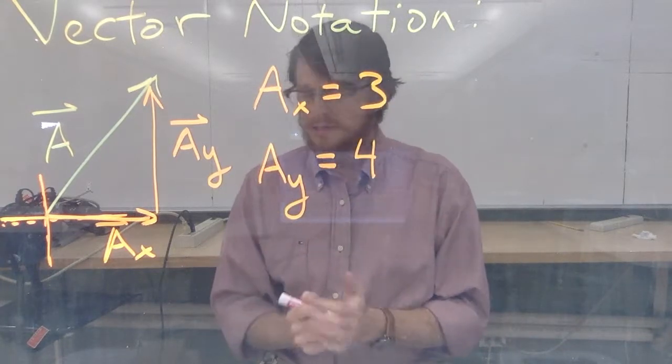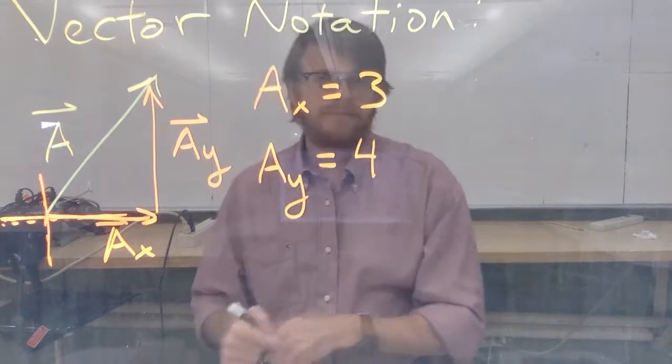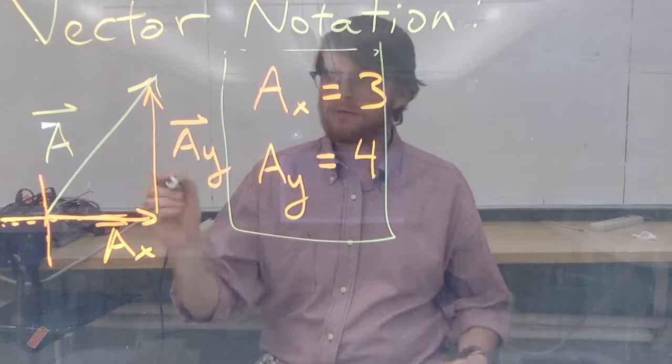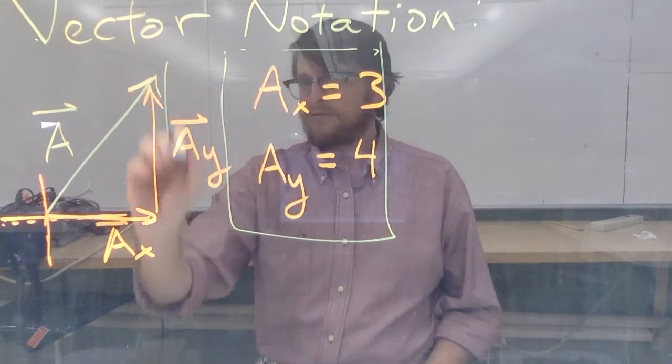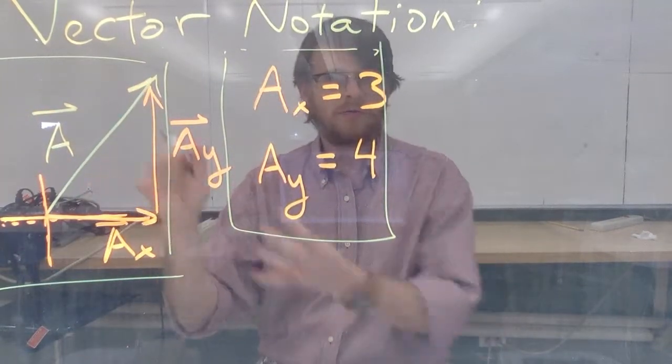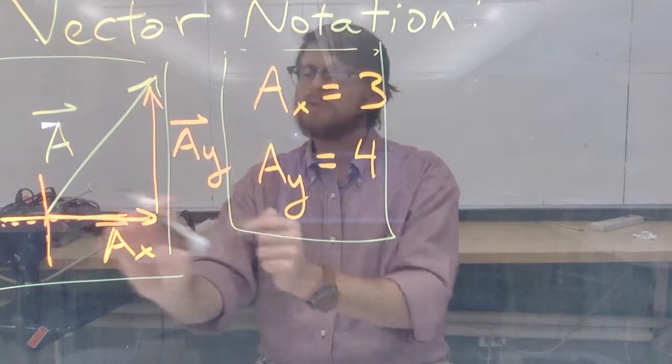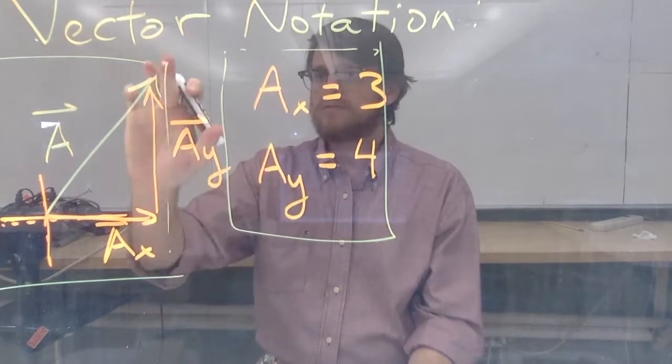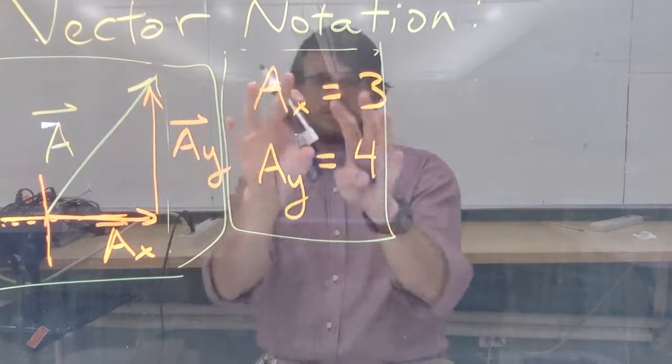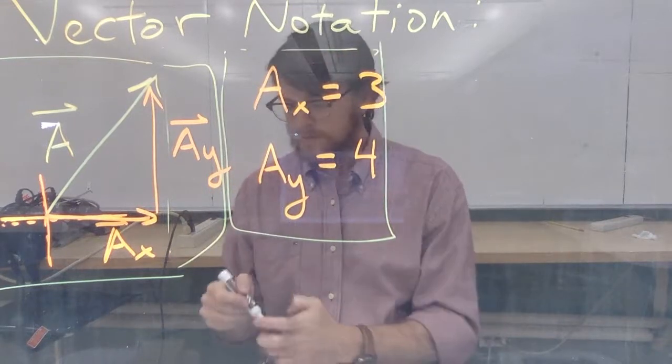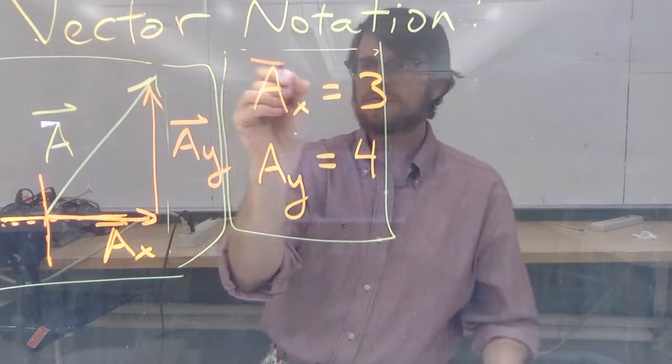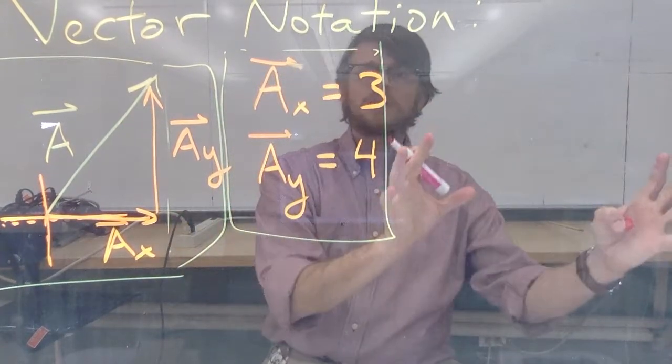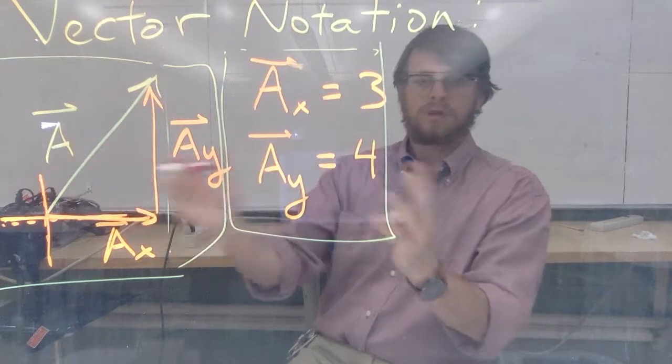So this representation right here is one representation of a vector. This one would be another representation. You could label the 3 and the 4 on the triangle itself. You could label 3 and 4 here. So we're going to add, I suppose, the box goes around here as well. So one representation, another representation. And technically, it's probably good for us to write vector hats over these. So that's another. And now I'm going to put in a third representation over here.